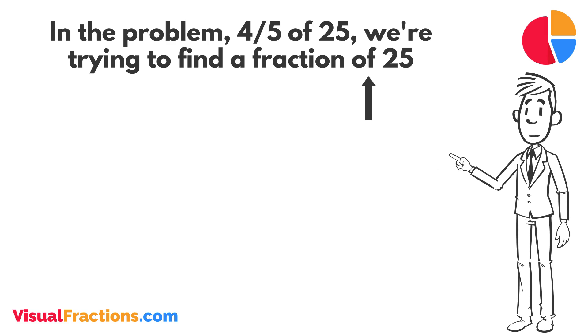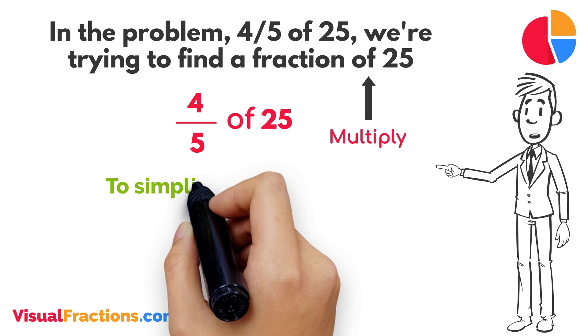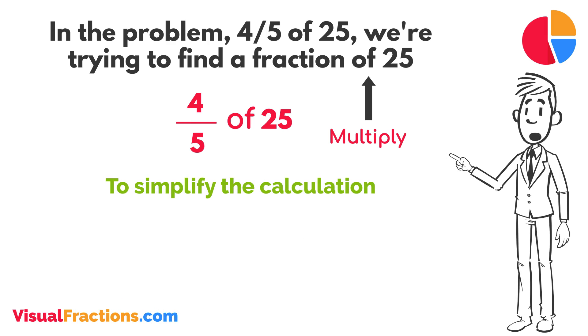The word 'of' in mathematics typically means to multiply, so we rewrite our problem as multiplication: 4/5 times 25. To simplify the calculation, we first convert our whole number into fraction form, writing 25 as 25/1.